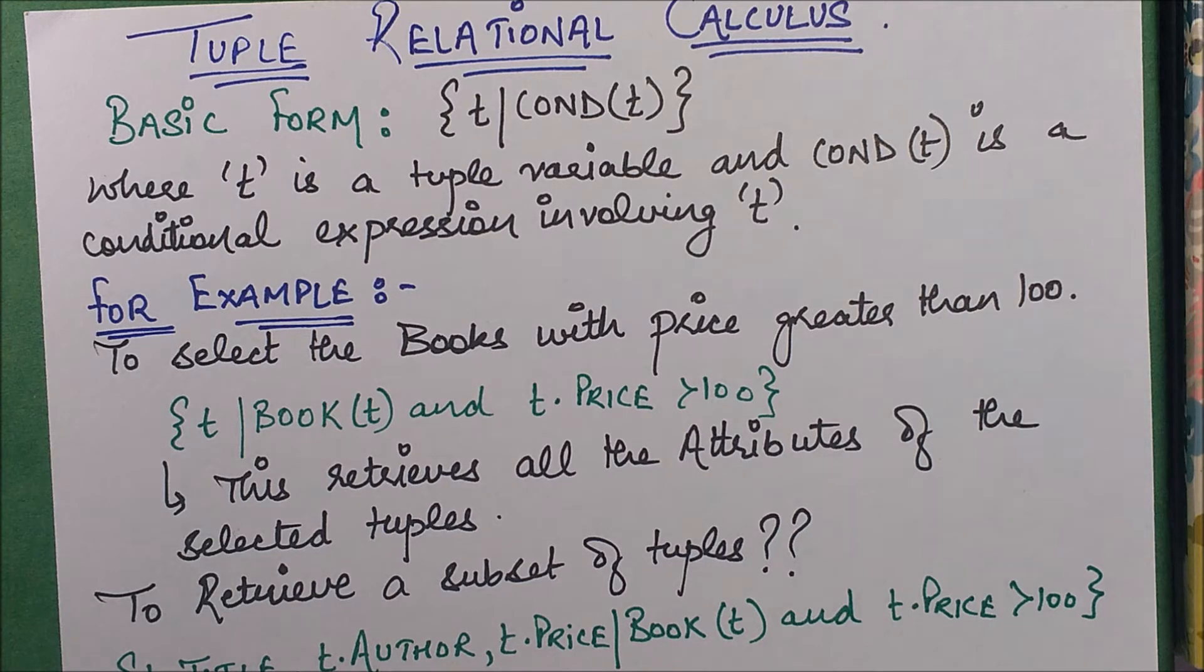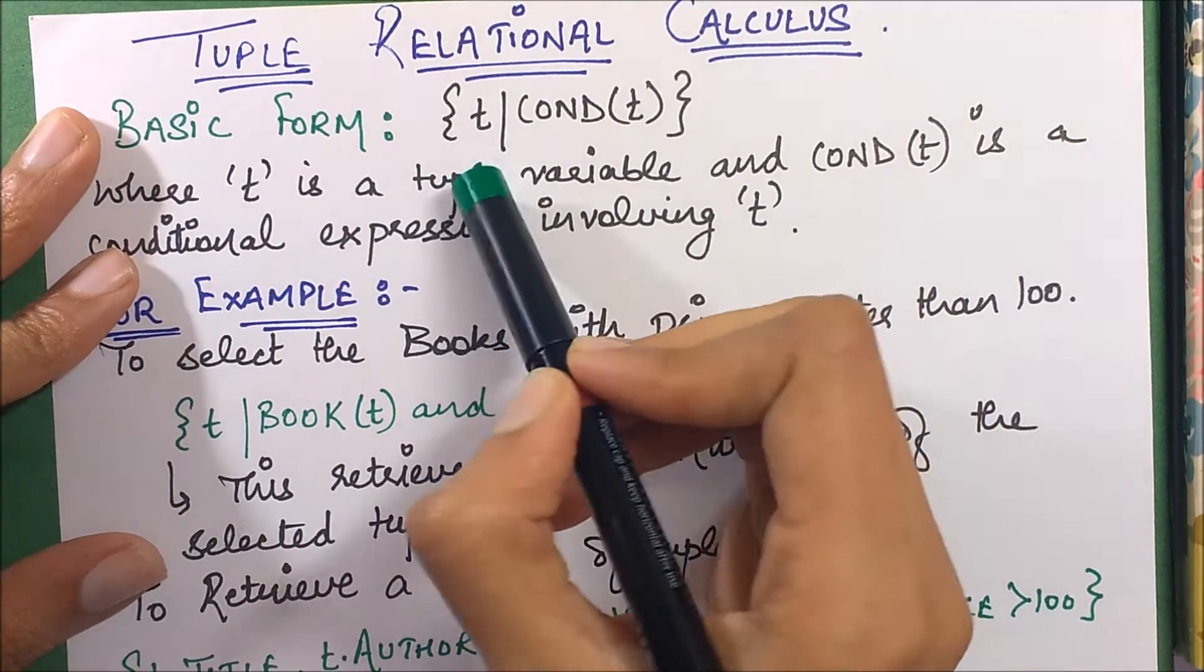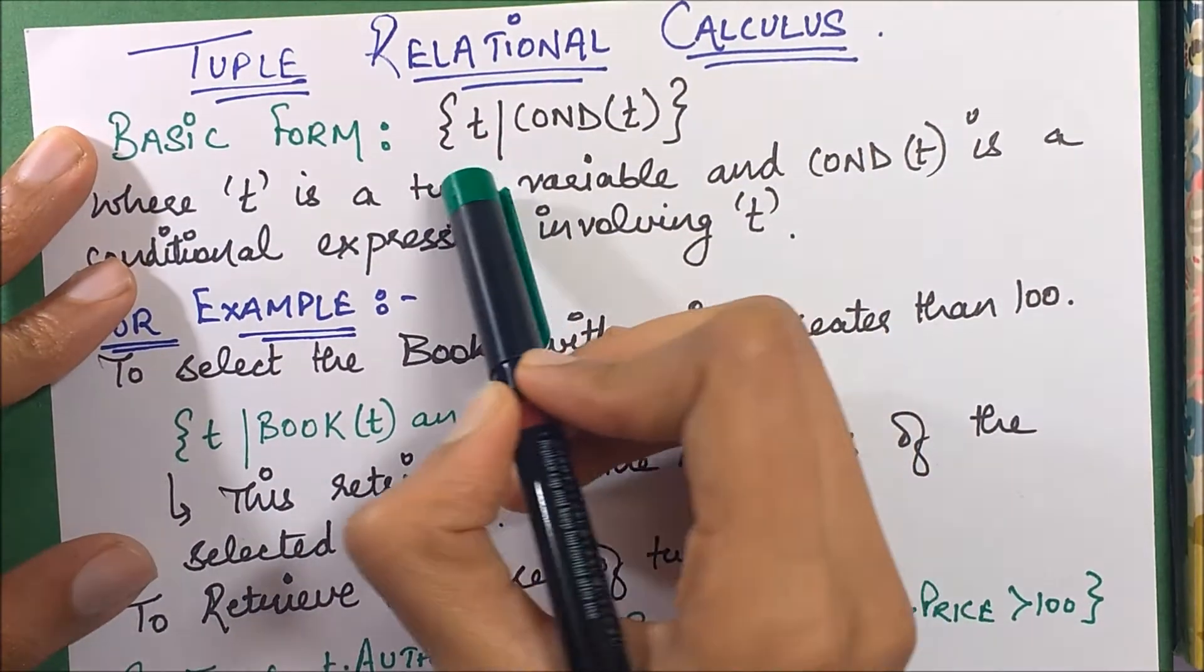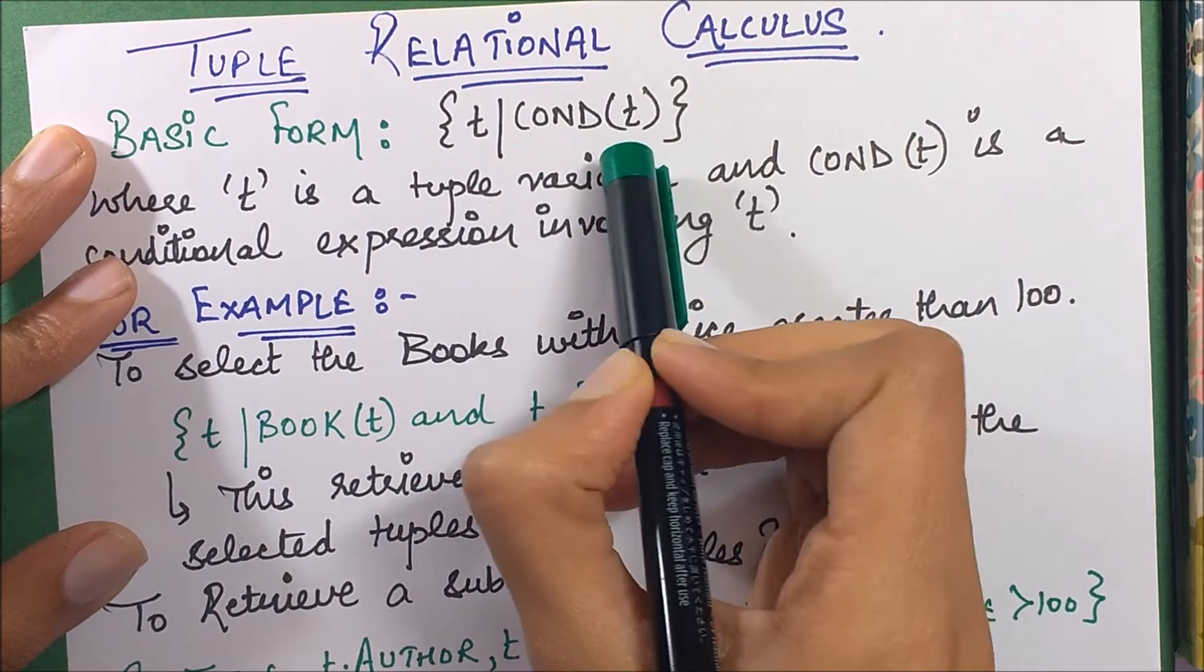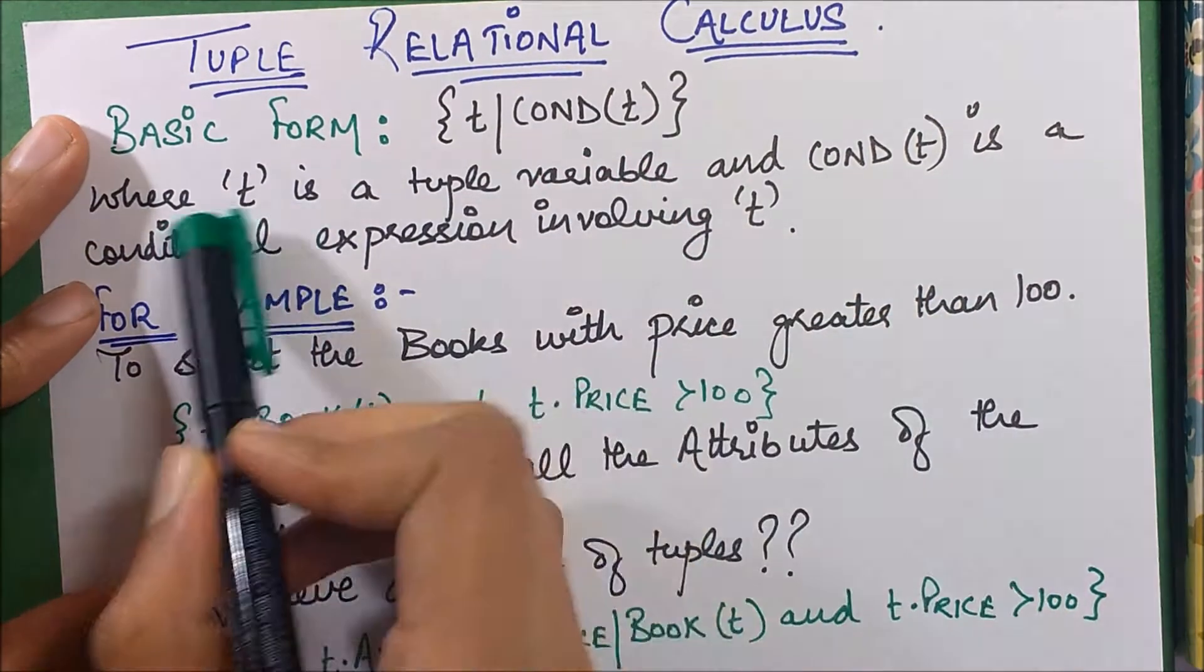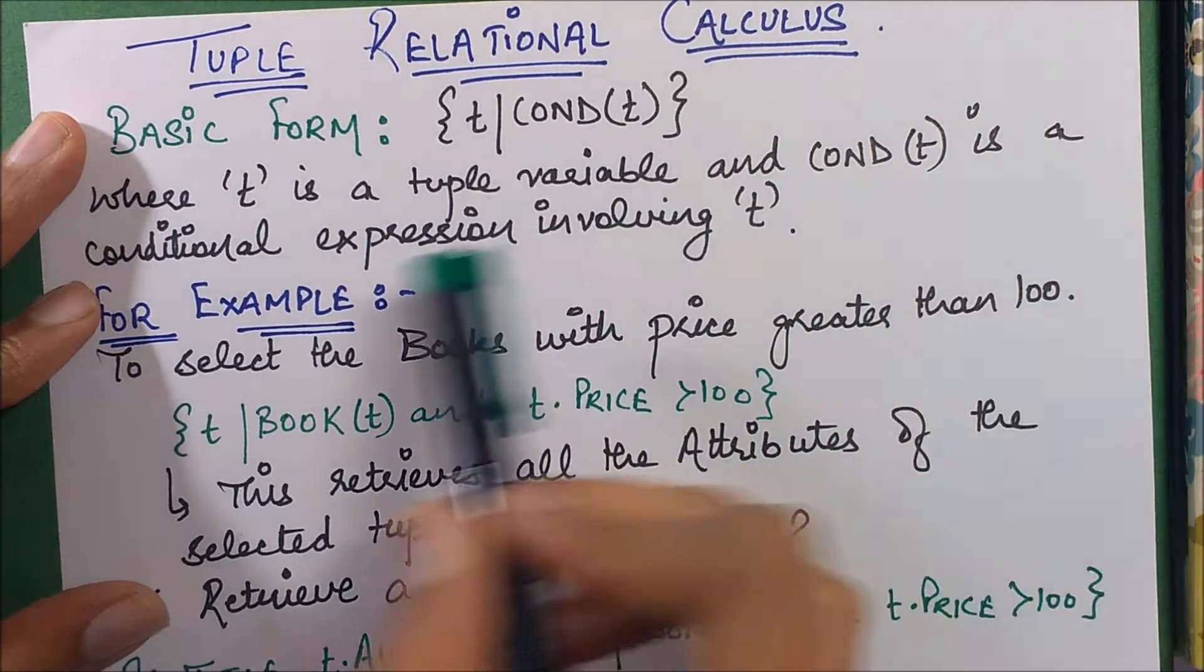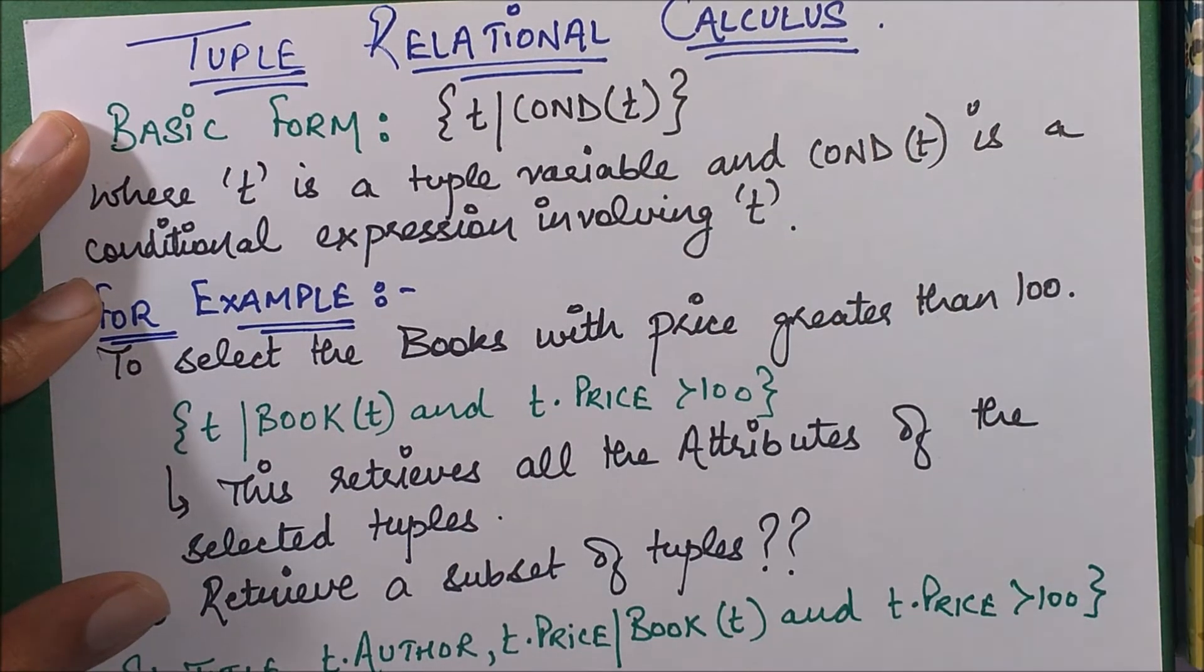The basic form is: select those tuples which satisfy this condition. So t is a tuple variable and condition t is a conditional expression involving t. Let's take an example.